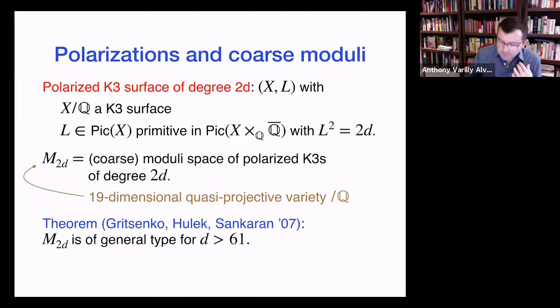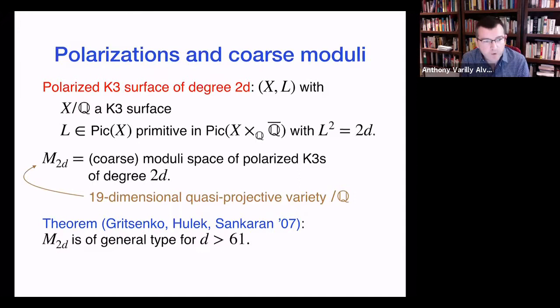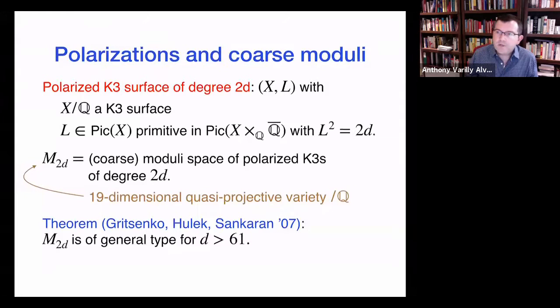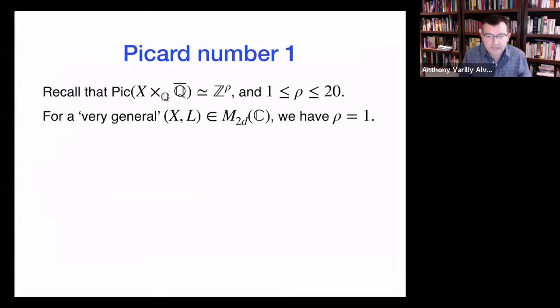There is a coarse moduli space that parametrizes polarized K3 surfaces of degree 2d. It is a 19-dimensional quasi-projective variety over Q — much more complicated than the j-line for elliptic curves. We do know things about the geometry: this coarse moduli space M_{2d} is of general type for d large enough. Currently 'd large enough' means d > 61. This is a result of Gritsenko, Hulek, and Sankaran in 2007 — analogous to the result that M_g is of general type for large g. For small degrees M_{2d} ends up being rational or unirational, but eventually it becomes of general type.